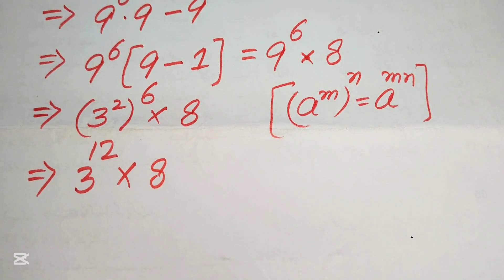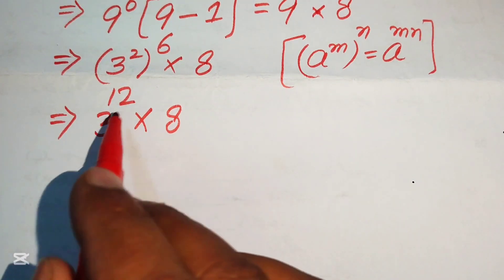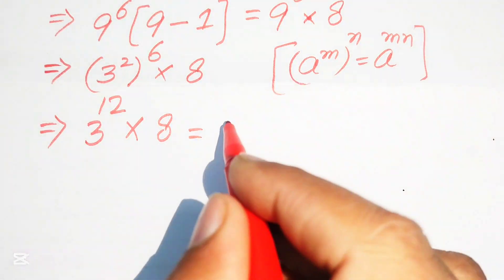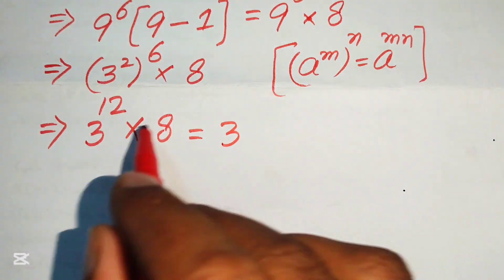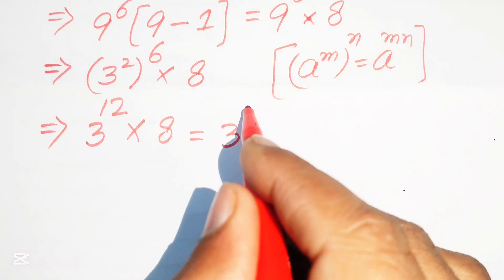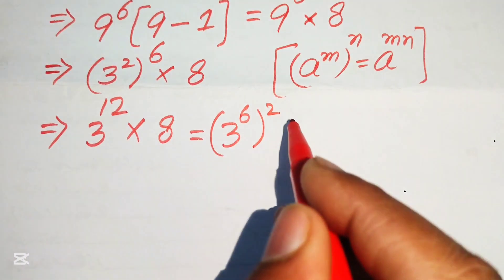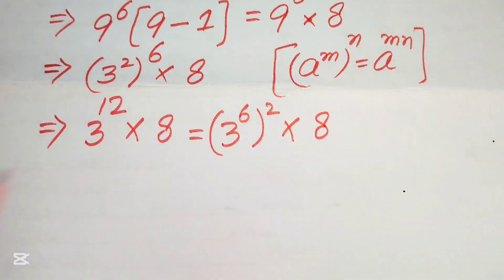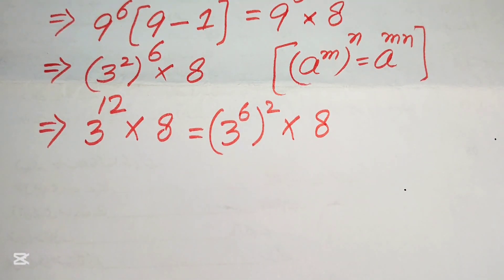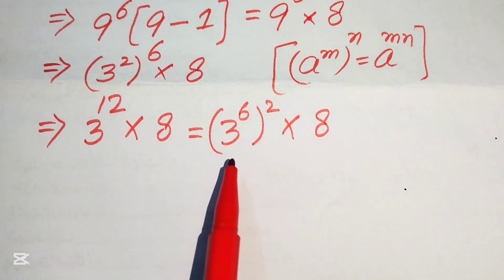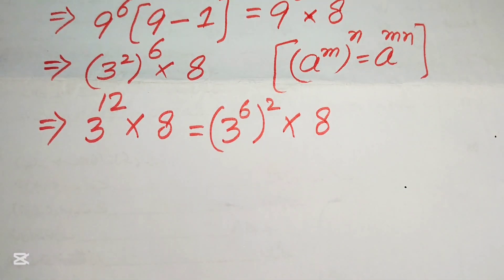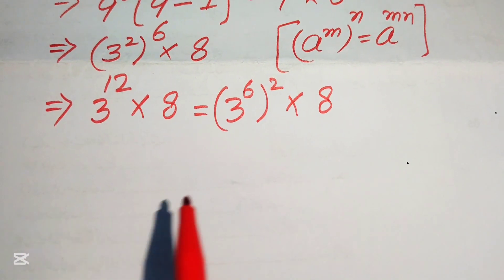We rewrite this expression: 3 to the power of 12 is written as 3 to the power of 6, whole squared, multiplied by 8. Our next target is to find the value of 3 to the power of 6.